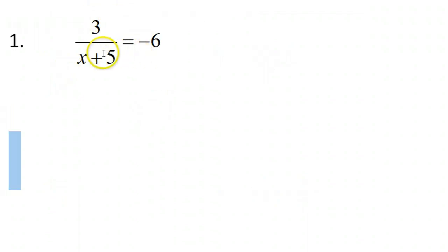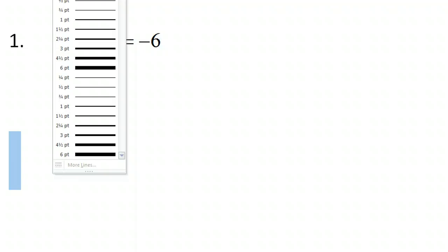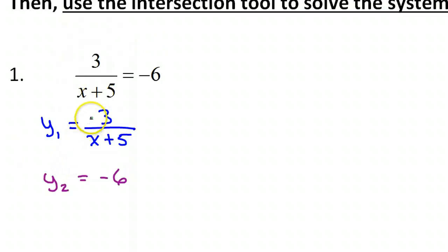We are going to type this equation into our calculator in two parts. One way to do it is to let the left side of the equation be one function and let the right side of the equation be the other function. So we would have this.